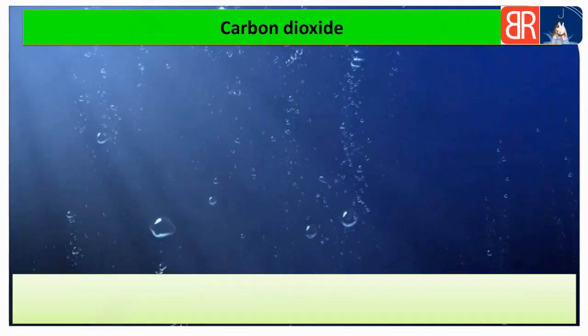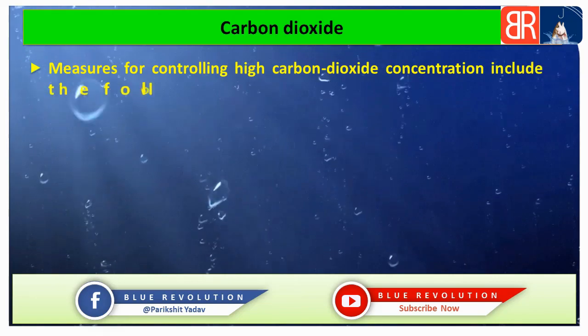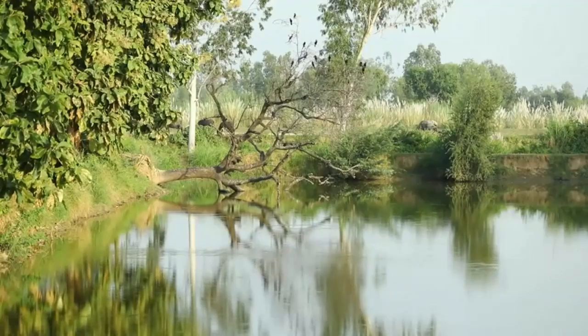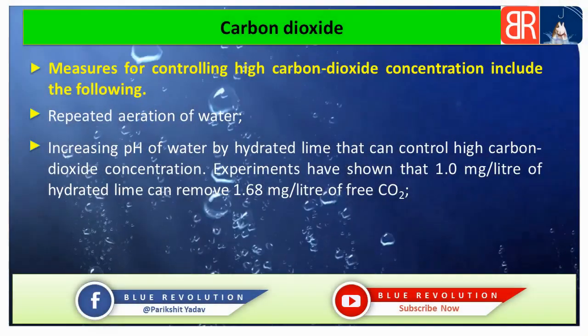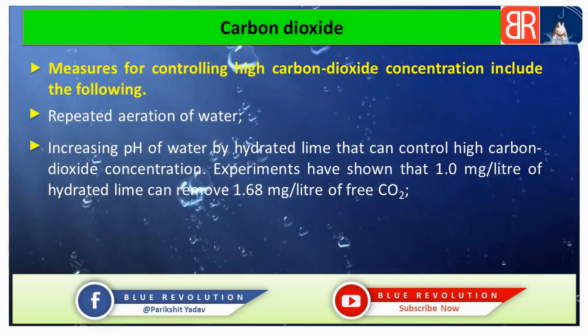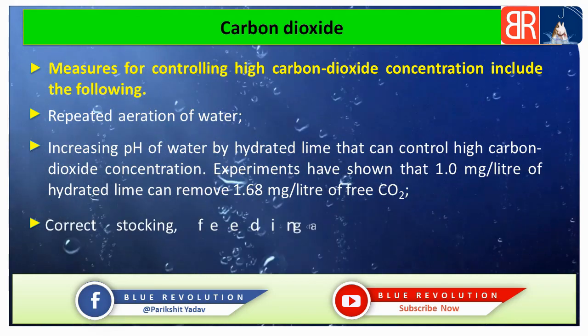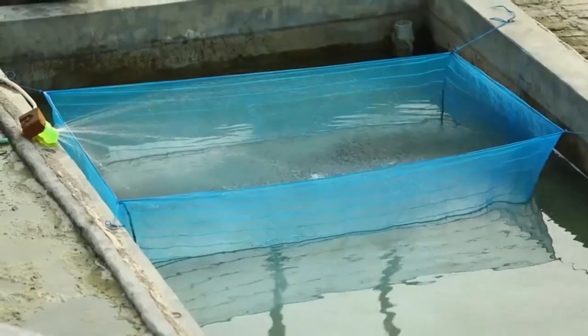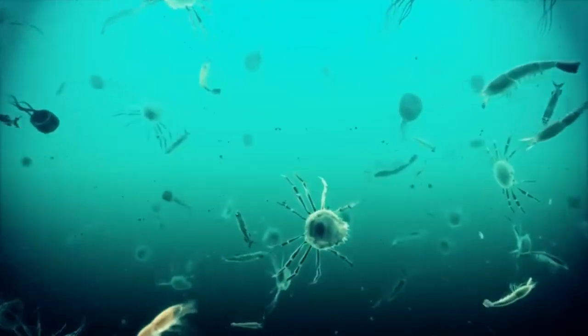Now we will discuss measures of controlling high carbon dioxide concentration. पहला: water में repeated aeration कराके CO₂ के concentration को control कर सकते हैं। दूसरा: hydrated lime का use करके pH को increase कर सकते हैं — 1.0 mg per litre hydrated lime, 1.68 mg per litre free carbon dioxide को remove कर सकता है। तीसरा: correct stocking, feeding और fertilization करना चाहिए ताकि phytoplankton population और organic loading water bodies में regulate हो सके।